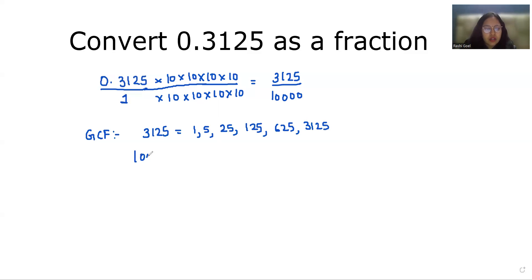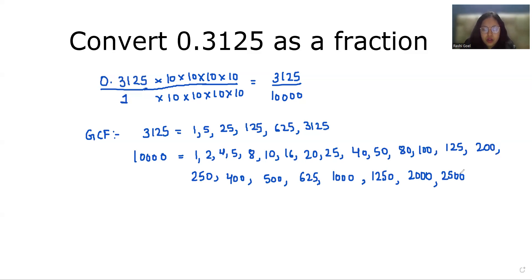Now we'll write the factors of 10000. That is 1, 2, 4, 5, 8, 10, 16, 20, 25, 40, 50, 80, 100, 125, 200, 250, 400, 500, 625, 1000, 1250, 2000, 2500, 5000, and 10000 itself.